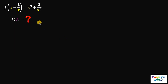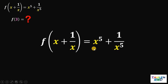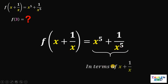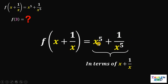To answer this question, the first thing to do is to take note of our given: f of (x + 1/x) equals x to the fifth power plus 1 over x to the fifth power. If we can rewrite the right-hand side of this equation in terms of (x + 1/x), then we're almost done — because we'll replace (x + 1/x) with 3, evaluate, and we're done. So let's carry out this plan.